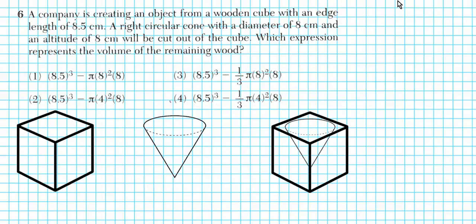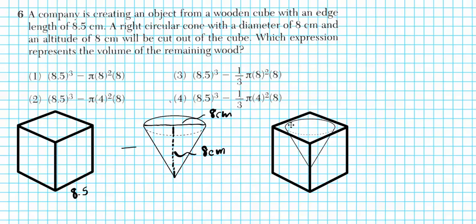So I have a picture of three shapes here to give you an idea of what's going on. We have a wooden cube with side lengths 8.5 for all sides, since all sides are congruent. Then we're going to take a right circular cone with a diameter of 8 centimeters and an altitude of 8 centimeters. This cone will be taken out of the cube, so you end up with a cube that has a hollow conical center.